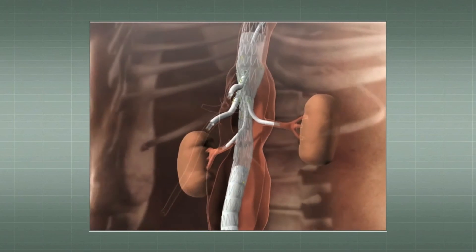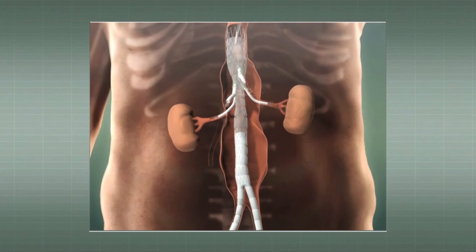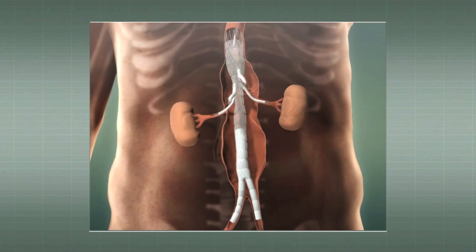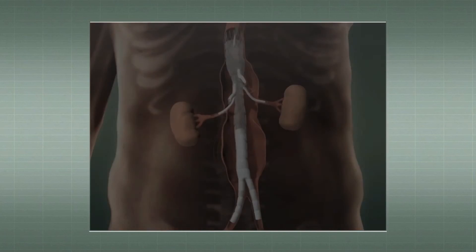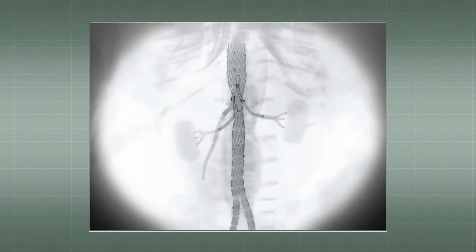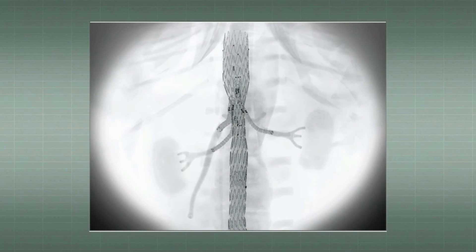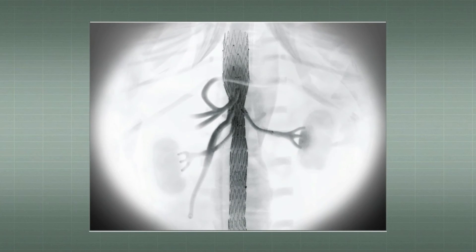After all bridging stents are in place, we check the complete system for endoleaks and confirm the perfusion of each visceral artery.